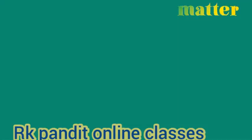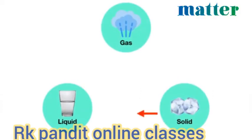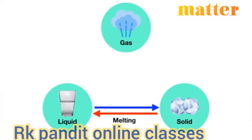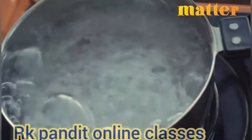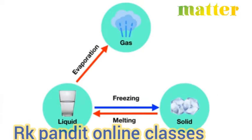Today we'll be learning about changes in the states of matter. There are three states of matter: solids, liquids, and gases. When a solid like ice turns into a liquid, we say it's melting. If a liquid like water turns back into a solid, we say it's freezing. If a liquid turns into a gas, like when you boil a pot of water, we say the liquid is evaporating. This is an example of evaporation.